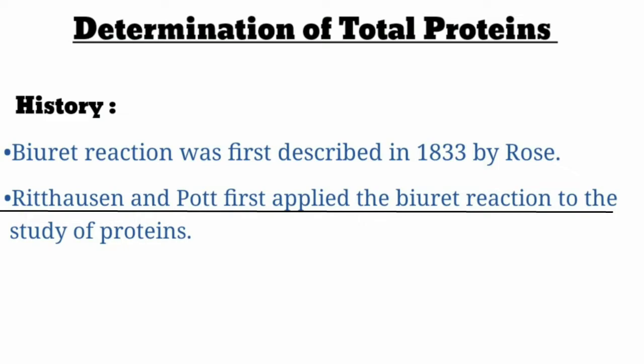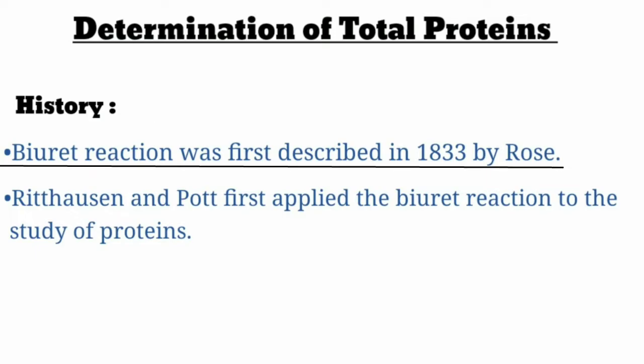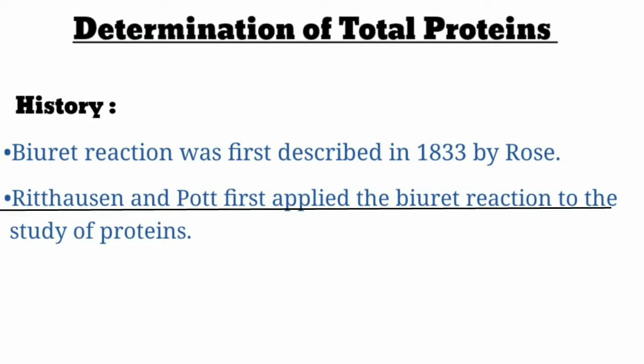Rithausen and Paul first applied the Biuret reaction to the study of proteins. The Biuret reaction was first described in 1833 — this is the year when scientists first became aware of the Biuret reaction. In the next slide I will tell you more.